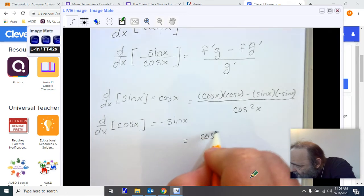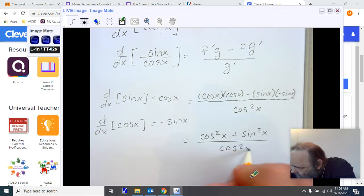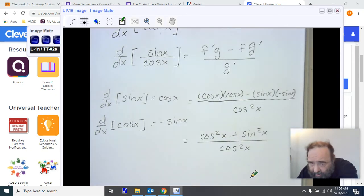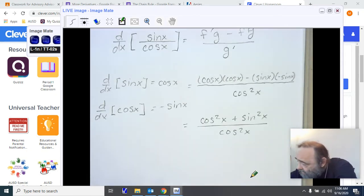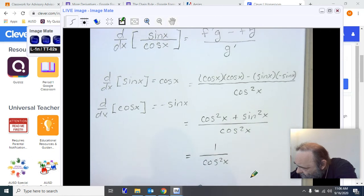Cosine squared x plus sine squared x divided by cosine squared x. Now, we know by our Pythagorean identities that the cosine squared x plus sine squared x is 1. 1 over cosine squared x means that this is really the secant squared x.